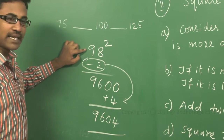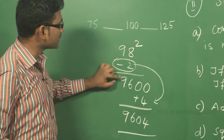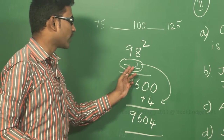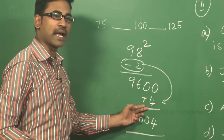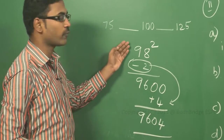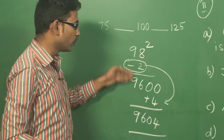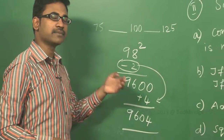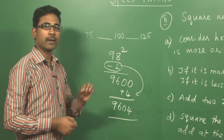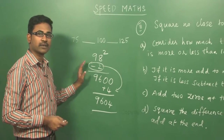To recap: 98 squared — the difference is minus 2, so subtracting gives 96. Add two zeros at the end. Square the difference and add at the last: that is plus 4. So 9604 is the answer for 98 squared. Initially this procedure will take some time, but after some practice you can do it in your mind. This simplification makes the calculation much simpler.